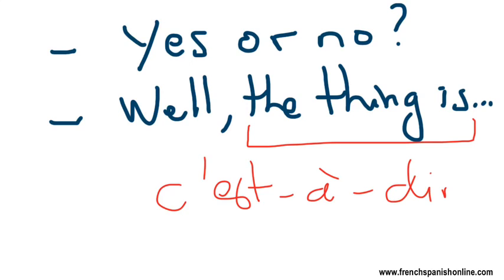So we will say 'oui ou non, c'est-à-dire que' and the meaning here is 'the thing is.' Okay, so now you know the meaning of c'est-à-dire and how to write the abbreviation.